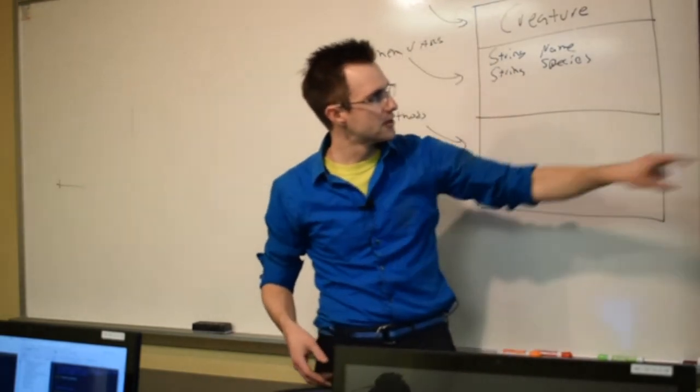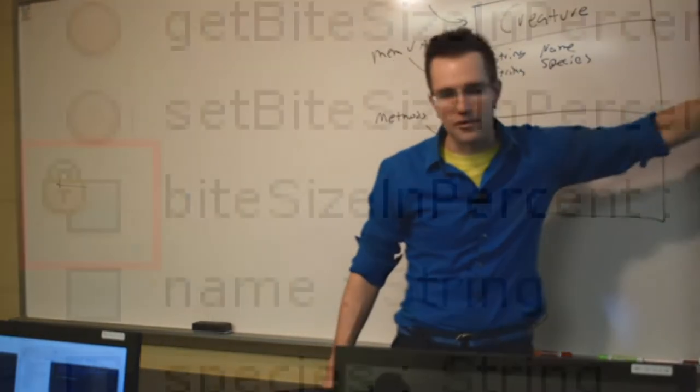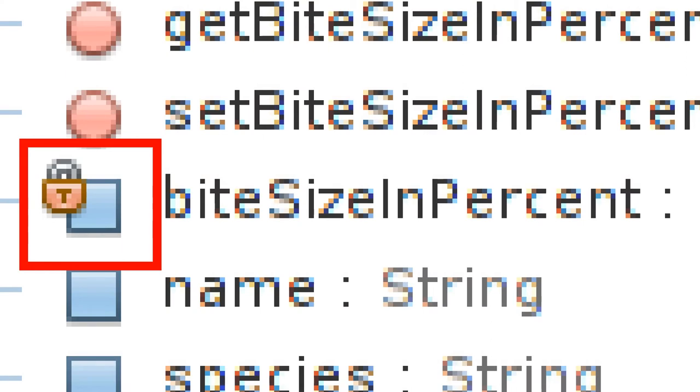Meaning, can any class get at Bite Size in Percent? No. No. You have to go through the object. Through what kind of door? A method door.